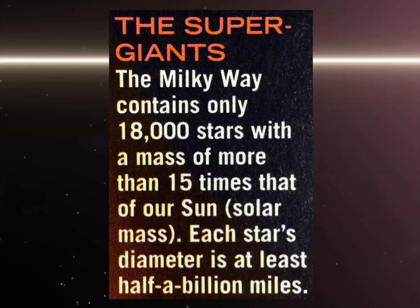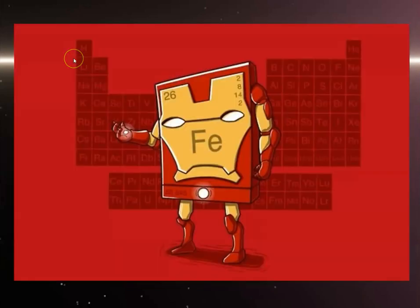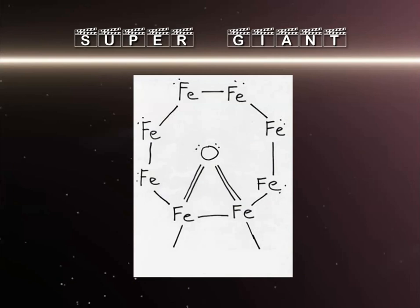Low mass stars are able to fuse up to carbon, but then need more energy — more mass — to continue fusion. High mass stars are able to fuse all the way to iron. Taking iron and fusing it with another iron atom requires even more energy, so iron is actually detrimental to high mass stars. The chemical symbol for iron is Fe, capital F, lowercase e, from the Latin 'ferris' — a little chemistry humor: you're looking at a Ferris wheel.